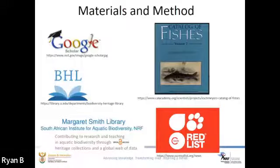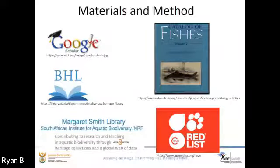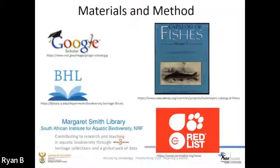Literature on the fishes of the ZLE were obtained from Google Scholar, the Biodiversity Heritage Library, and key ecological information repositories — in particular the Michael Smith Library and Collection database at the NRF South African Institute for Aquatic Biodiversity. Eschmeyer's Catalog of Fishes was used to verify valid genera and species, and the IUCN Red List assessment was used to check for IUCN status.